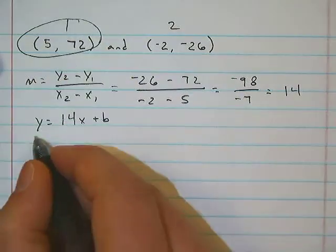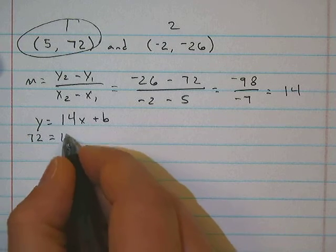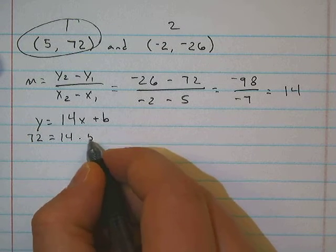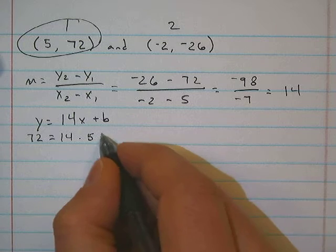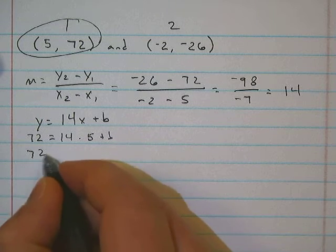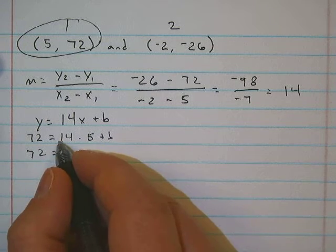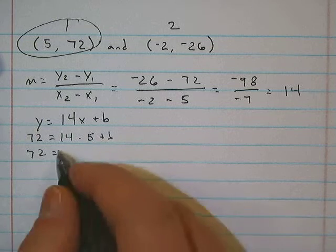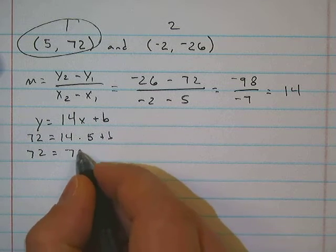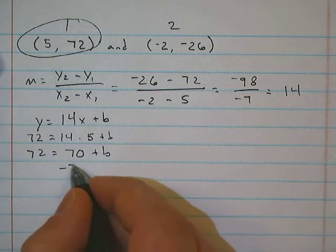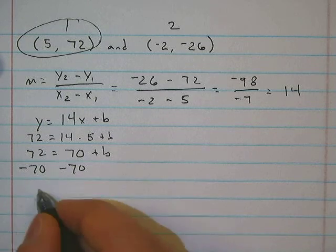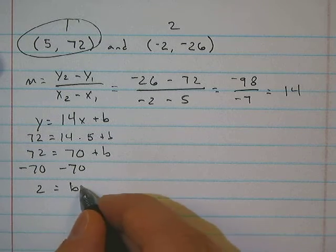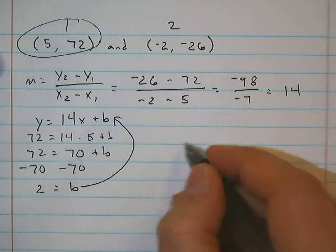So y equals 14x plus b. We pick one of these points. I'm going to use this one. 72 is equal to 14 times 5 plus b. 72 is equal to 5 times 10 is 50, 5 times 4 is 20, 50 plus 20 is 70, plus b.